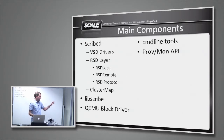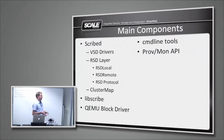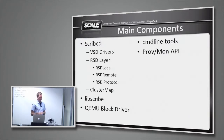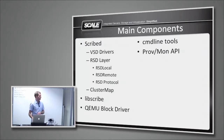Within the Scribe daemon we have a few components: VSD drivers, an RSD layer responsible for communicating to all disks in the cluster, a cluster map which provides clustered consistency and root metadata support, LibScribe as our library, and our QEMU block driver — the part of QEMU we modified to support native connections to Scribe. Since we've developed this as a native component to QEMU, those command line tools just work out of the box. We also have provisioning and monitoring APIs.